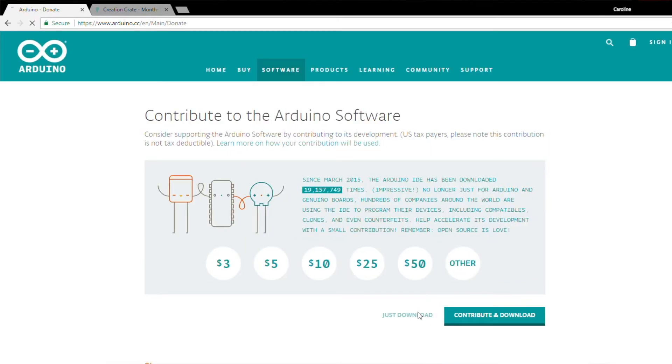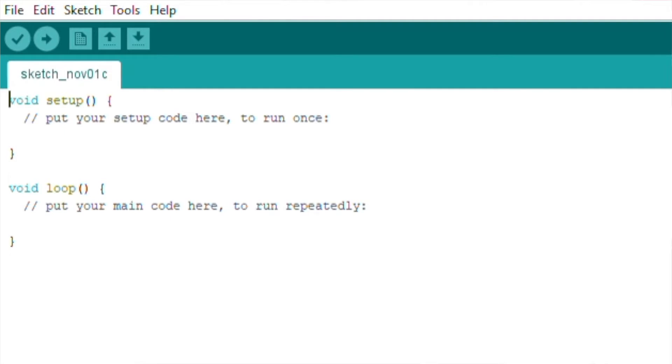I'm going to download the Arduino software. I've already done it so I'm going to cancel this. Then you're going to go through the regular .exe install process and you'll come up with, I'm opening the Arduino application here.